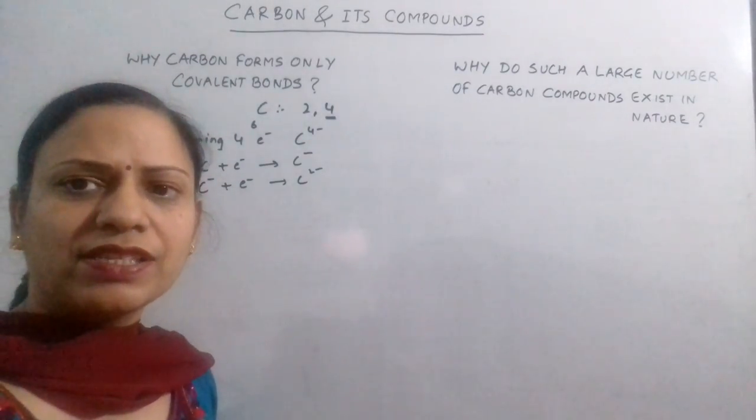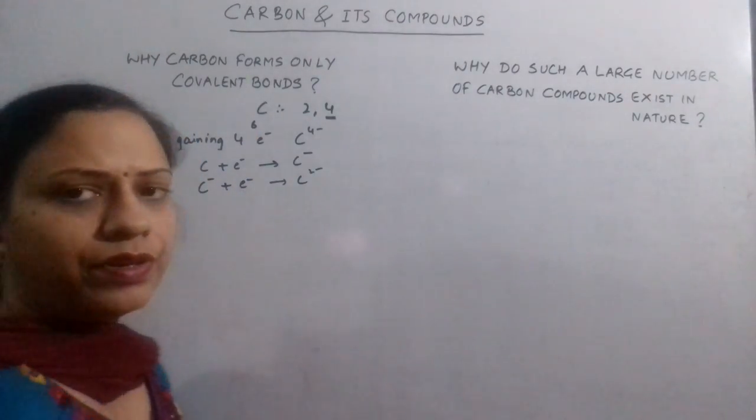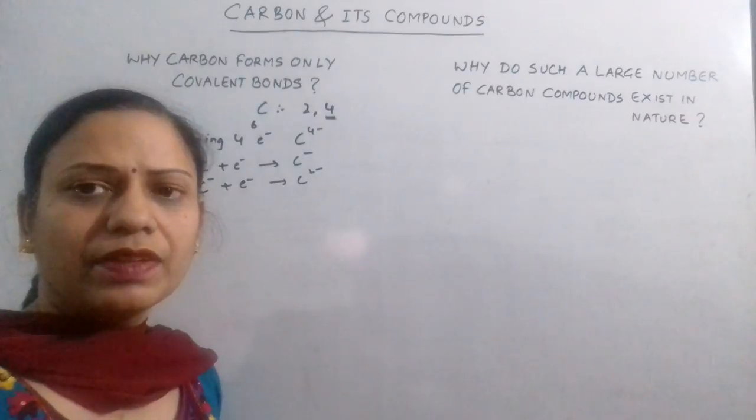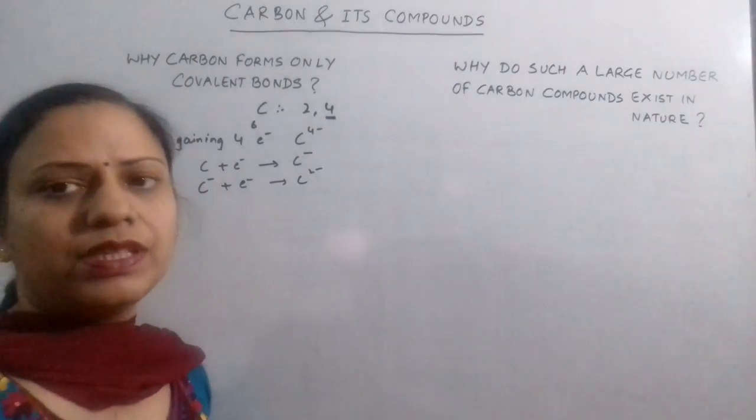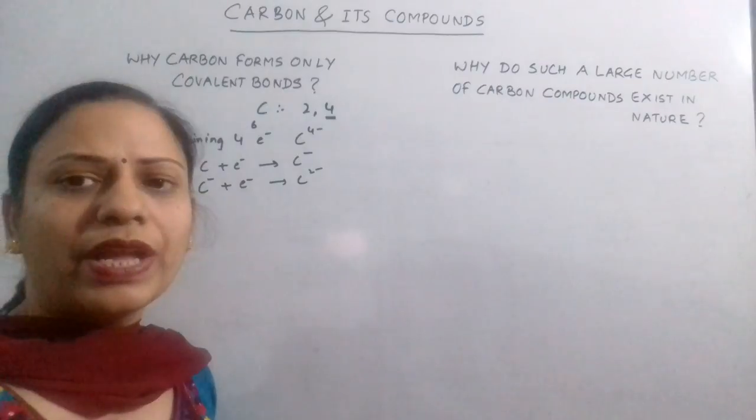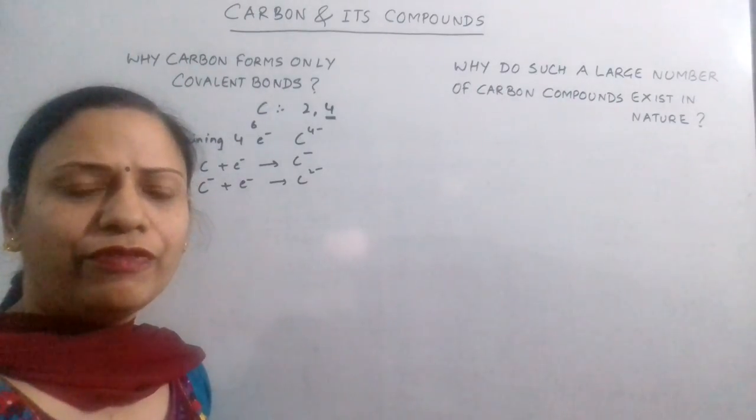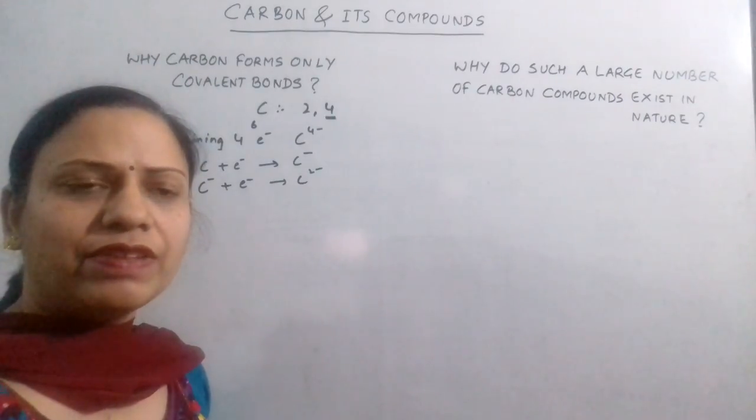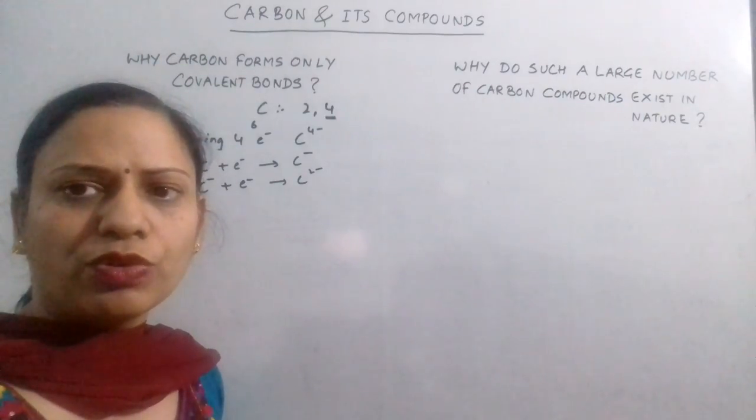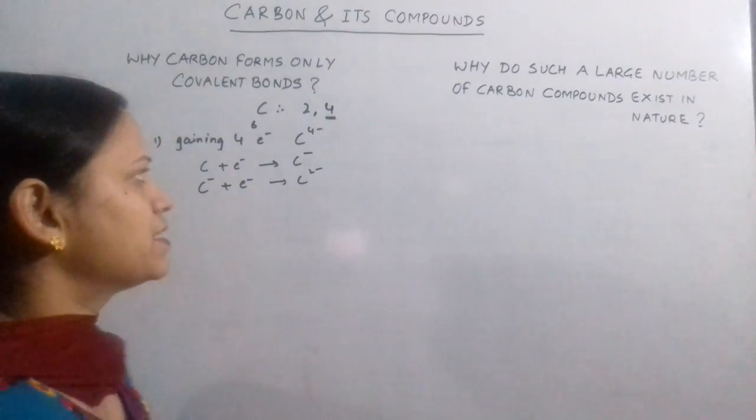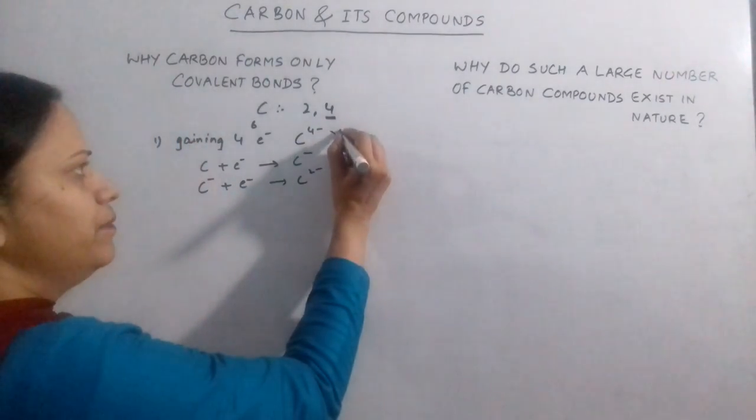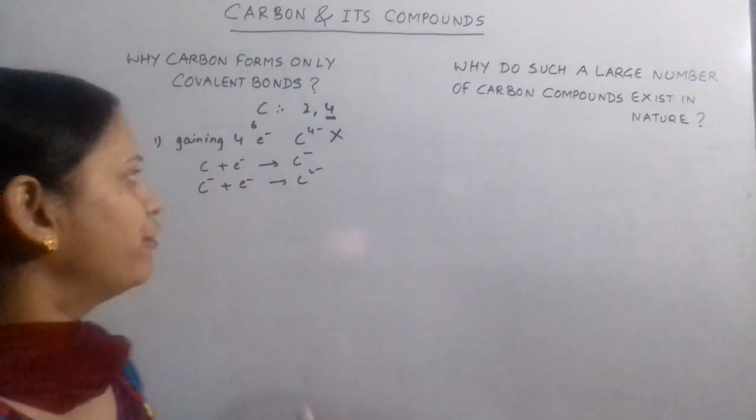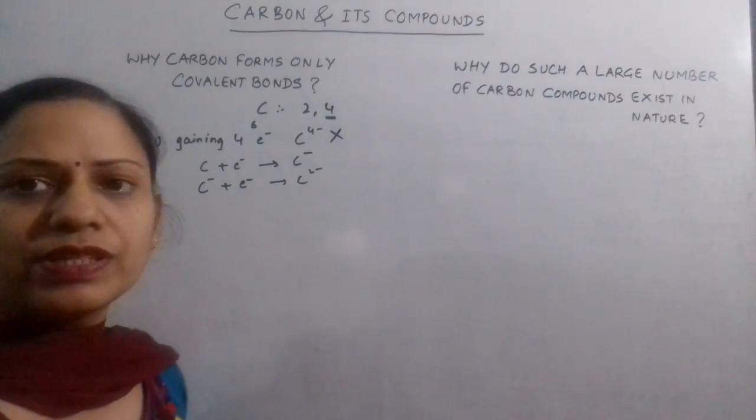We all know that like charges repel each other. So adding an electron to a negatively charged ion is very difficult. We may imagine C2 negative might be formed just like O2 negative exists, but adding negative to 2 negative is more difficult and adding to 3 negative is even more difficult. A large amount of energy is required which makes C4 negative highly unstable. So this does not exist. The first possibility of gaining 4 electrons is ruled out.